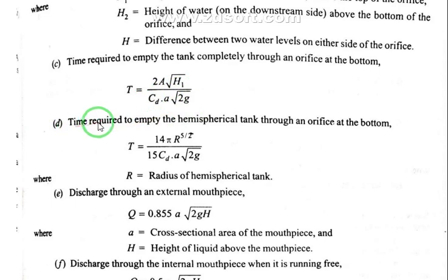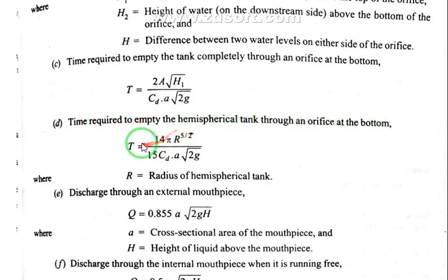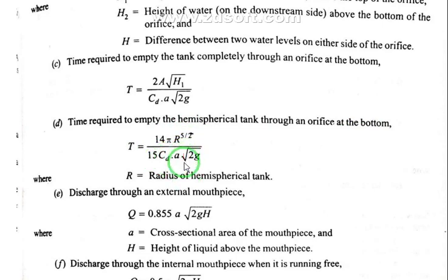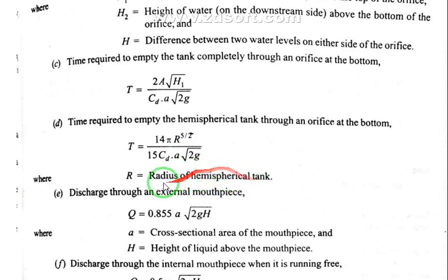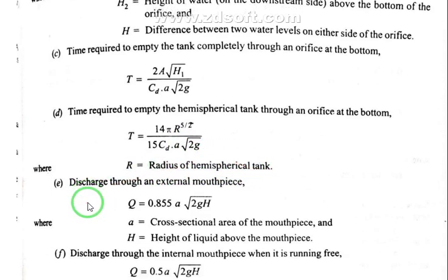Time required to empty a hemispherical tank through an orifice at the bottom: capital T equals (14π·R^(5/2)) divided by (15·Cd·a·√(2g)), where R is the radius of the hemispherical tank, and a is the area of the orifice.